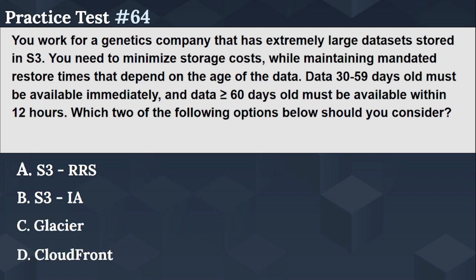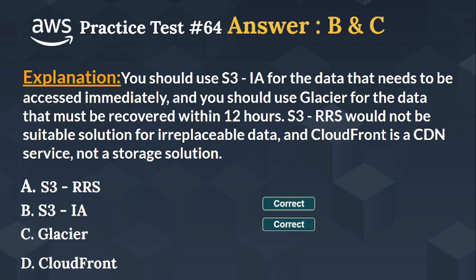5, 4, 3, 2, 1. The correct answer is Options B and C — S3 IA and Glacier. You should use S3 IA for data that needs to be accessed immediately, and Glacier for data that must be recovered within 12 hours. S3 RRS would not be suitable for irreplaceable data, and CloudFront is a CDN service, not a storage solution.